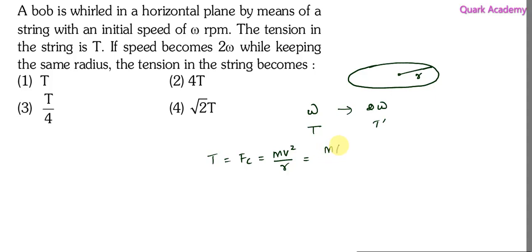So m v can be written as r omega, so r omega squared over r. So tension can be written as m r omega squared.